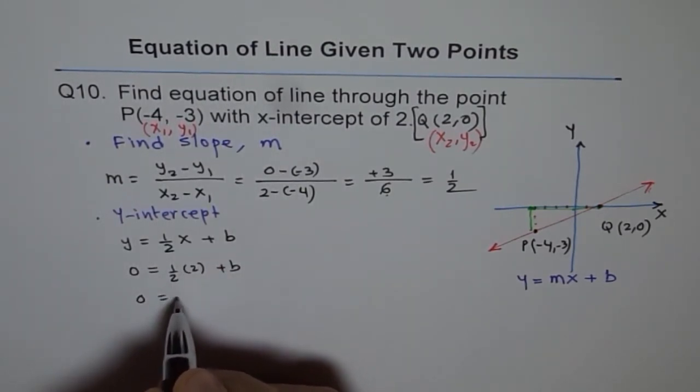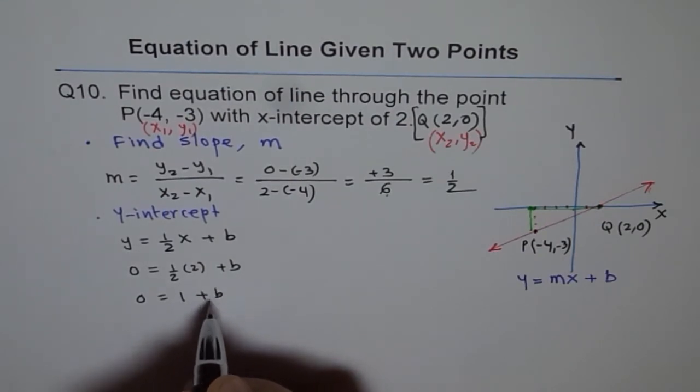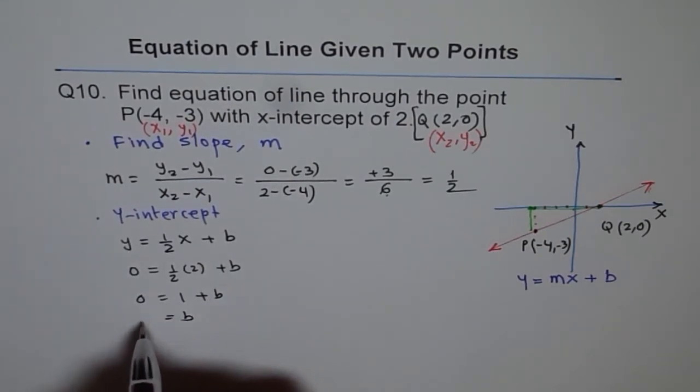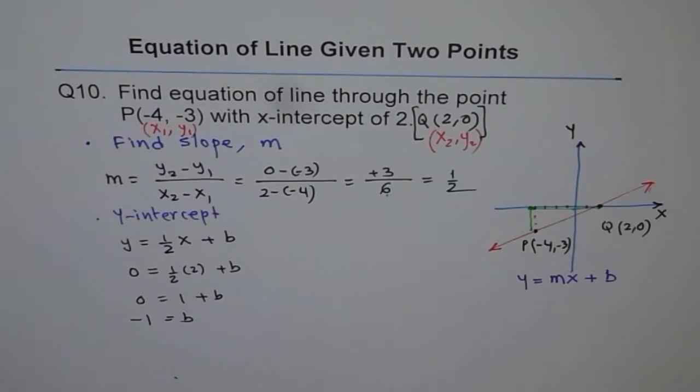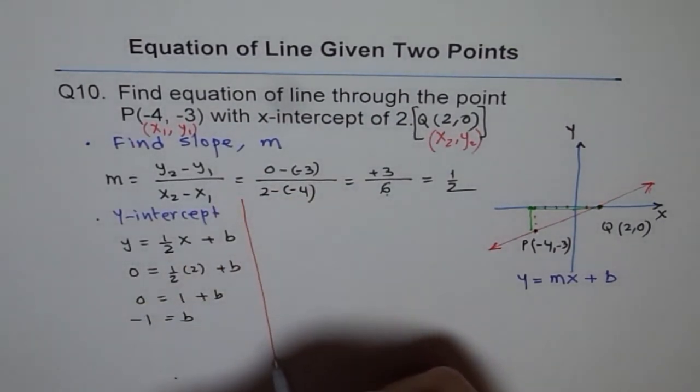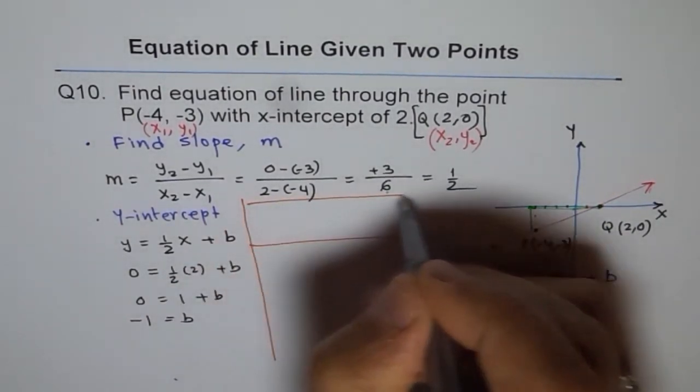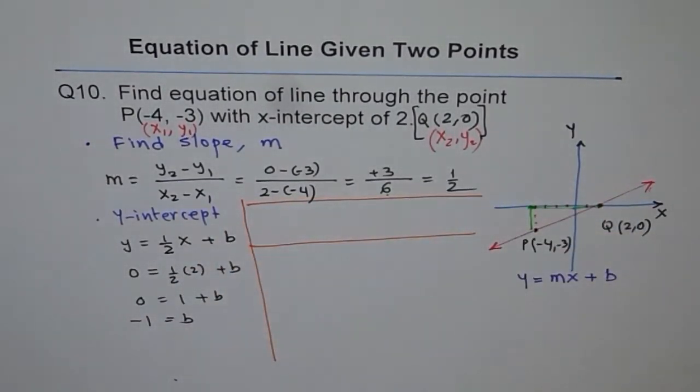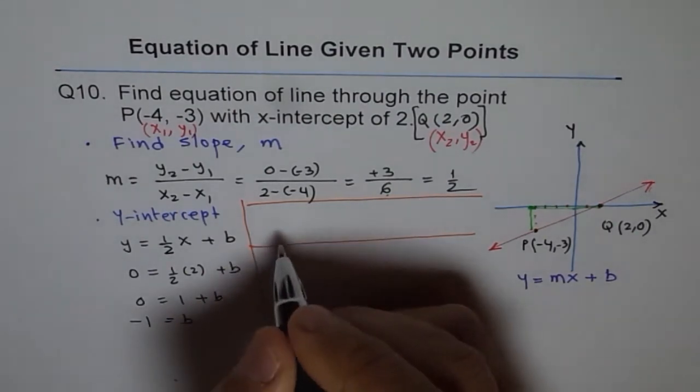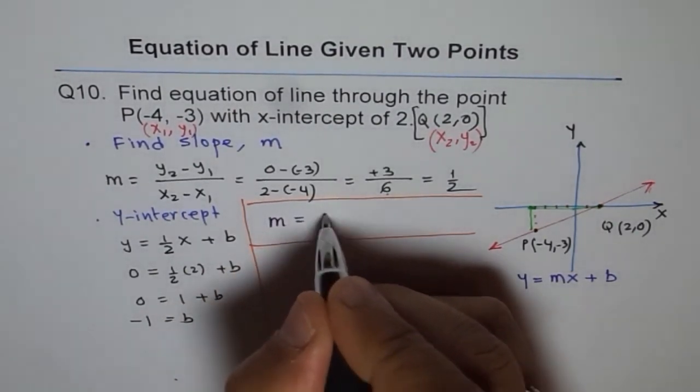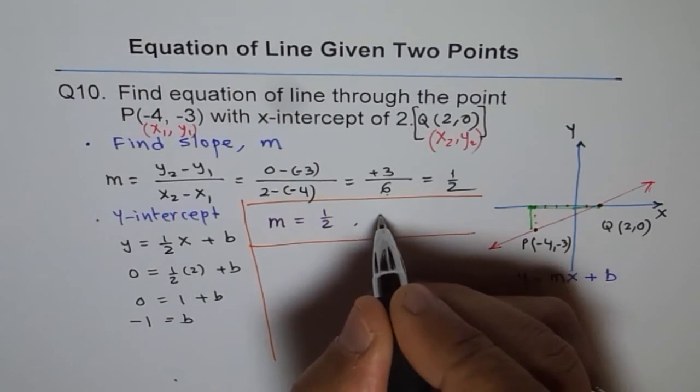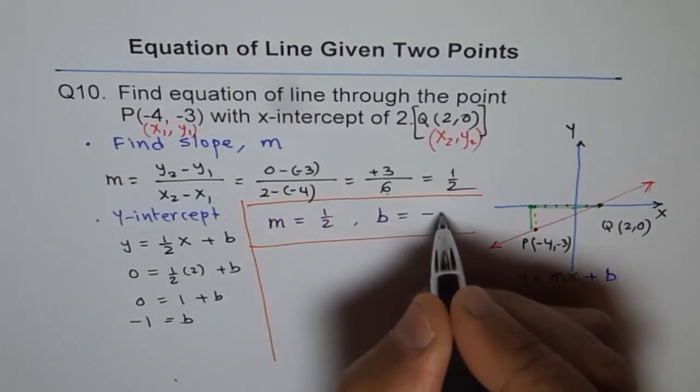That gives us 2 divided by 2 is 1. And therefore, b equals to minus 1. So we know now the value of b also, the y-intercept. So what we know here is 2 things. That is, slope m equals to half and y-intercept b equals to minus 1.